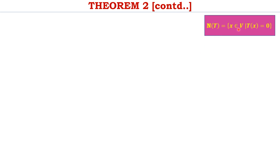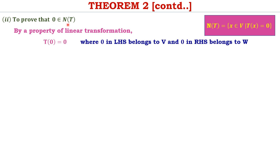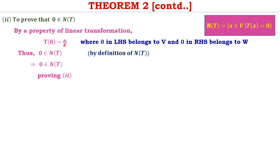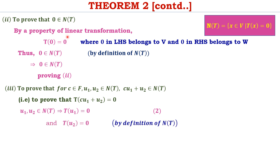Recalling that N(T) is the set of all elements of V mapped to the zero element of W, we now prove that 0 belongs to N(T). By a property of linear transformations, T of 0 equals 0, where the left-hand 0 is in V and the right-hand 0 is in W. Thus T of 0 equals 0 satisfies the condition T of X equal to 0, giving X equal to 0, meaning 0 is an element of N(T), proving the second condition.